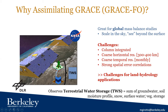Terrestrial water storage is the summation of all waters within land — groundwater, soil moisture, snow, the water in lakes, rivers, and the canopy. So again, column integrated. Most importantly, the observations from these satellite missions are pretty coarse in horizontal resolution — about 300 to 400 kilometers, roughly the width of California. And they also come in monthly averages, so coarse in both space and time.